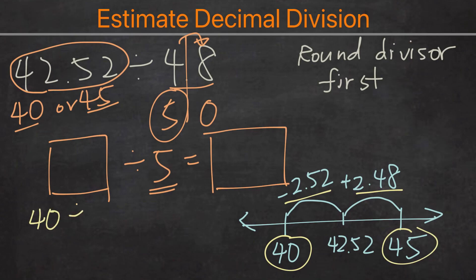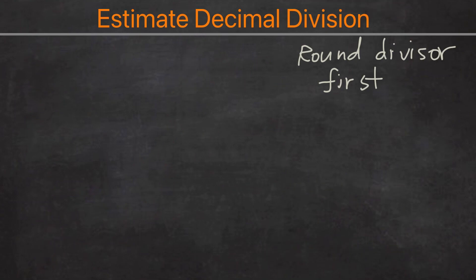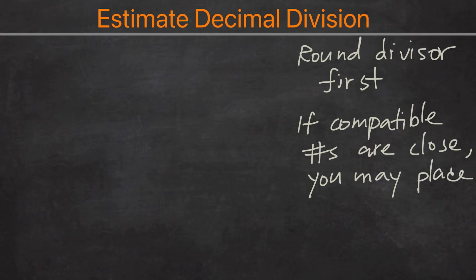And so we can do 40 divided by 5 which equals 8, and then we have 45 divided by 5 equals 9. And the approximate value we would put 8 or 9, like so. If you put 8 or if you put 9, those are also acceptable. And now we're going to go through one more example before we get to the quiz problem. So I'll put this in the tip section: if compatible numbers are close, you may place more than one answer. So these are the two tips.